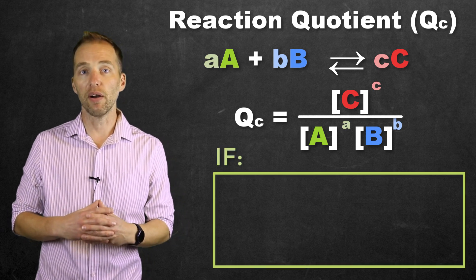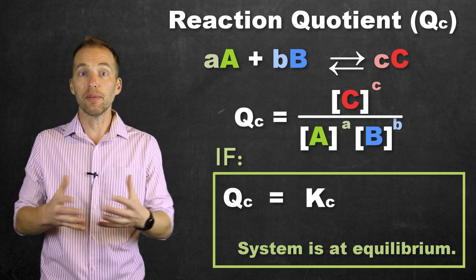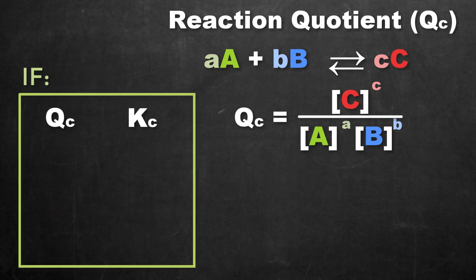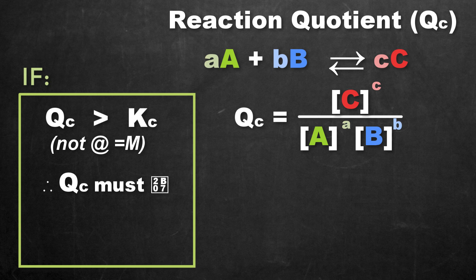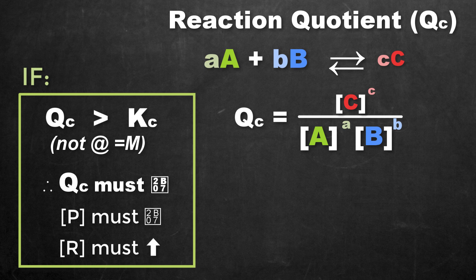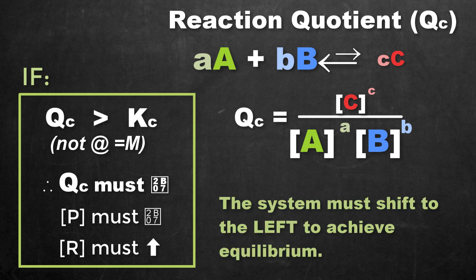If QC equals KC, the system is at equilibrium. If the concentrations used to calculate QC result in a QC greater than KC, the system is not at equilibrium. For the system to reach equilibrium, QC will have to decrease — meaning the concentration of products in the numerator must decrease, and the concentration of reactants in the denominator must increase. Since this is a closed system, this is achieved by a shift toward the reactant side — that is, a shift to the left.